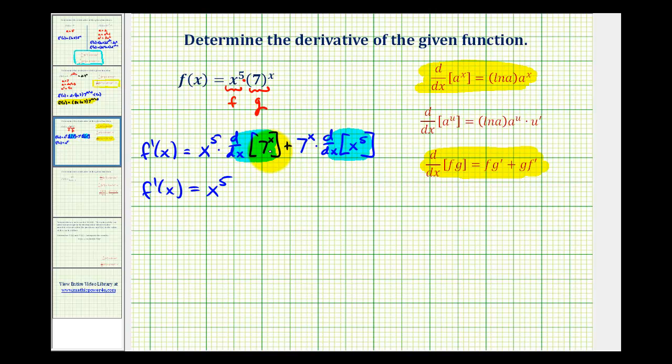Since the exponent is x, we don't have to apply the chain rule. So notice the base is equal to a, so a is equal to seven. So our derivative is natural log a or natural log seven times a to the x, which is seven to the power of x.